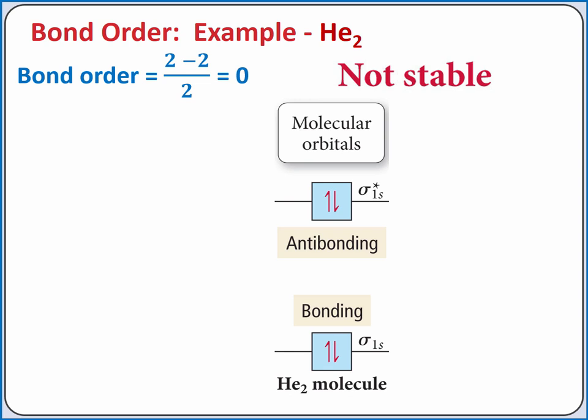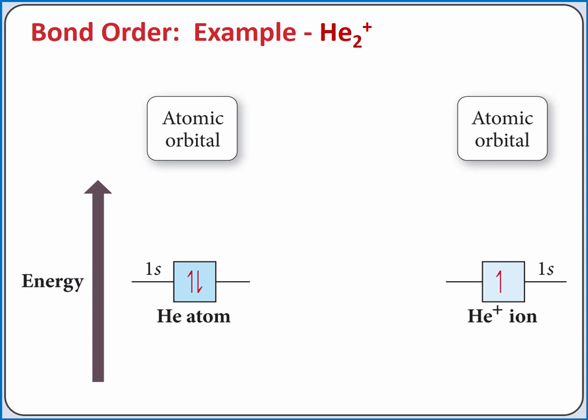This isn't exactly a victory, though — given our other theories, we wouldn't expect He₂ to exist anyway. To see some of the benefits of molecular orbital theory, let's apply it to He₂⁺.